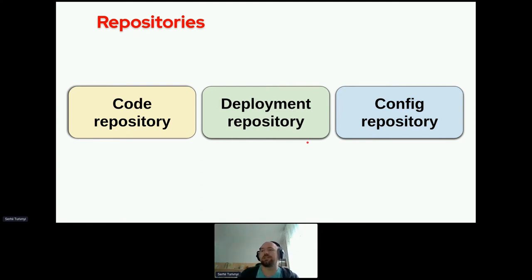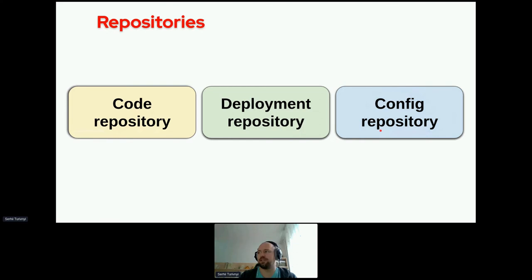We came up with the idea to separate our entire deployment process into three repositories. One repository has the source code. The second one is the deployment repository — it's a repository with Helm charts. And the third one is a repository with configuration. This third repository is just a YAML file that takes parameters from the code repository and the deployment repository, and you can easily deploy to production.